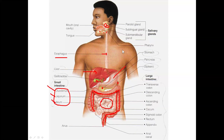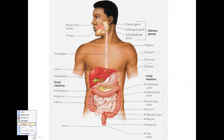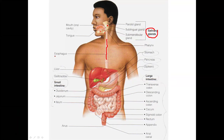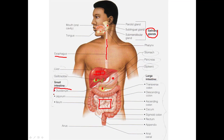Reviewing the key parts: the saliva glands, the esophagus as the food tube, the liver, gallbladder, pancreas, and stomach. The small intestine is broken into three parts — the duodenum, the jejunum, and the ileum — and then the large intestine follows.